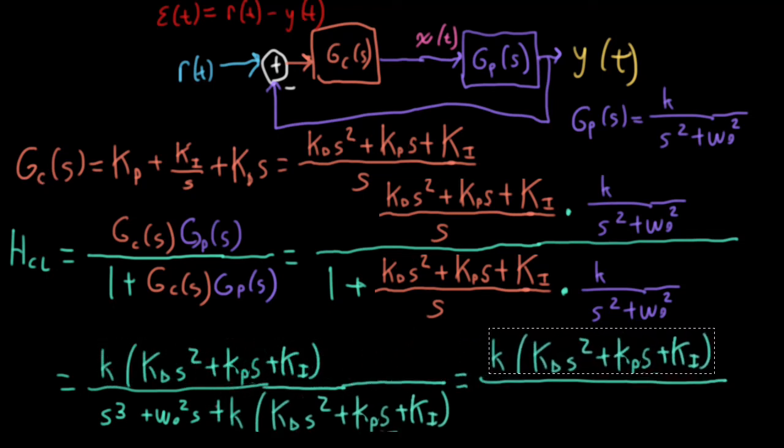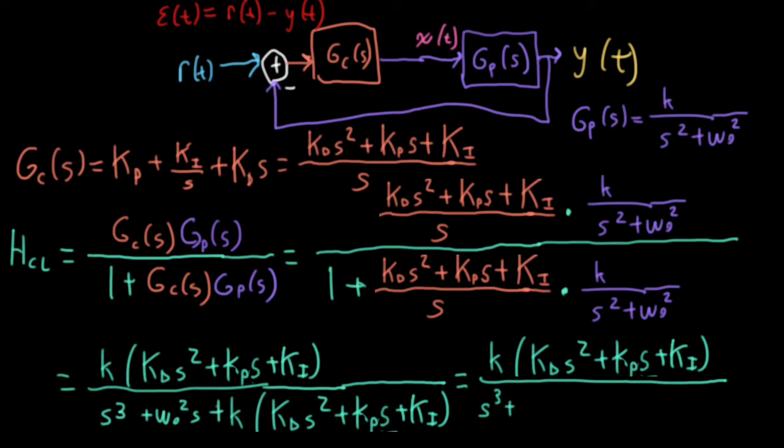So this whole thing equals this stuff. And let's see, what about the denominator? Okay, so I've s cubed. And for the s squared terms, I have little k, capital Kd. Okay, this might not have been a good choice of notation on my part, times s squared. For the s term, I'll have little k, big k, p, plus omega naught squared. And then for the constant term, I'll have little k, capital Ki.